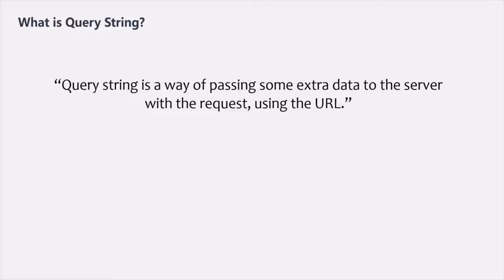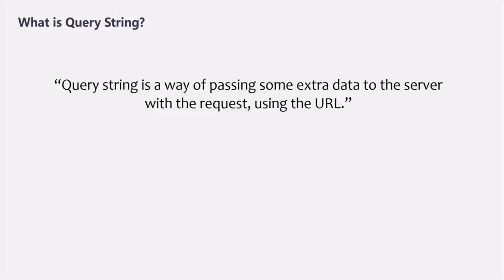Query String is a way of passing some extra data to the server with the request using the URL. Here we have an example of a URL. The URL is localhost colon 4200 slash products, and after that we have some strings. A Query String can be specified in the URL by using a question mark, and after that we can specify some Query Strings.